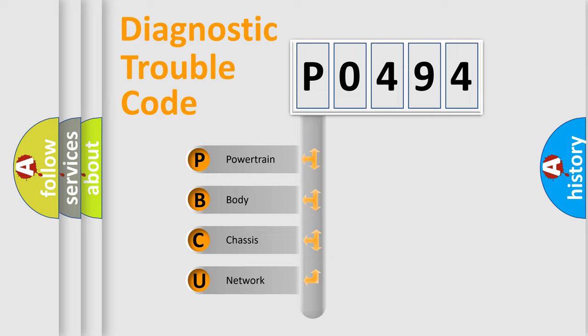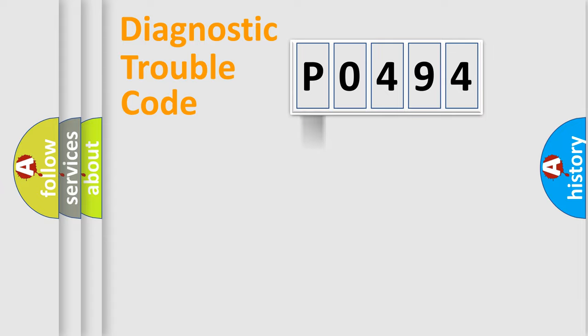We divide the electric system of automobile into four basic units: powertrain, body, chassis, and network. This distribution is defined in the first character code.